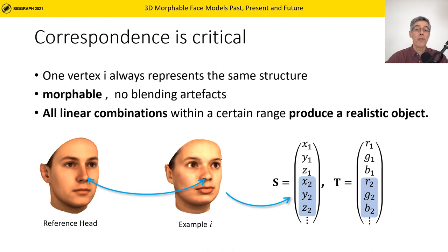The critical feature is dense point-to-point correspondence between all individual faces. In the shape and texture vectors, each component describes the position and color of the same point in all faces — for example, the tip of the nose. To establish this correspondence is the main challenge when building a morphable model.